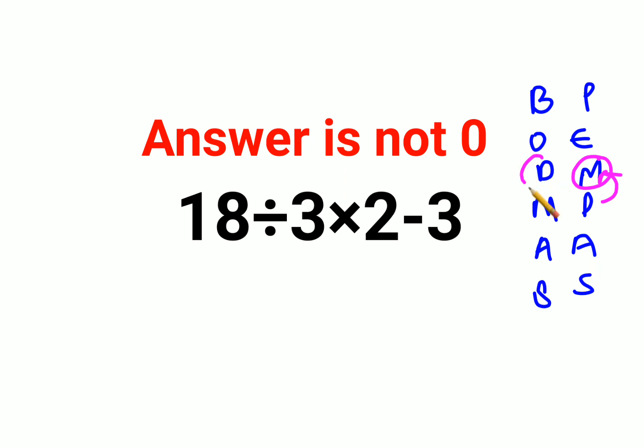then what about people who are following division first? They would do 18 divided by 3, that is 6, into 2 minus 3, that gets you 12 minus 3. Answer comes out to be 9. So in that case, it will cause a lot of discrepancy. There is a very small thing but a lot of people don't know about it, and that is that both division and multiplication have equal importance.